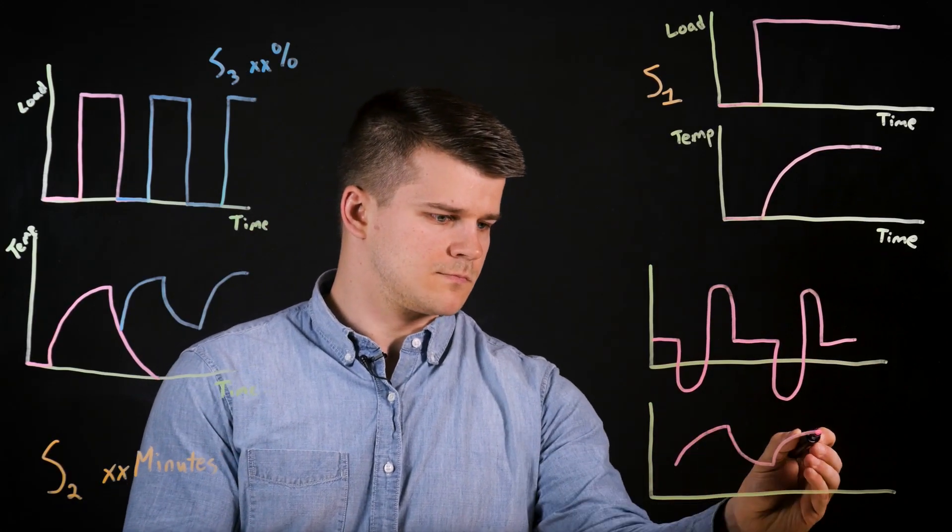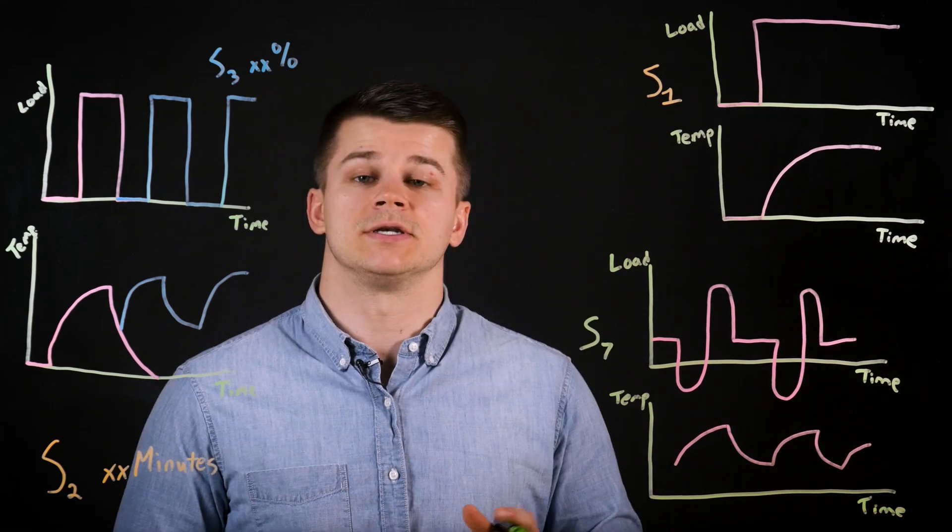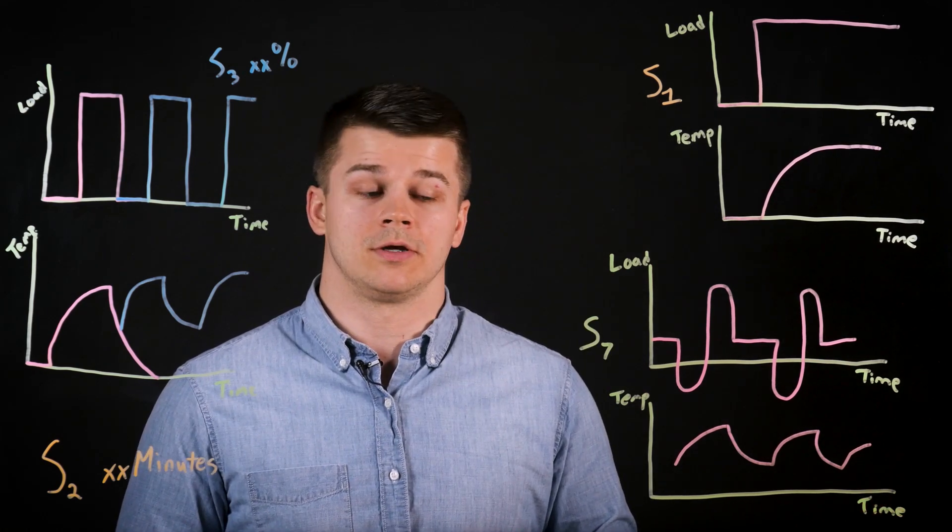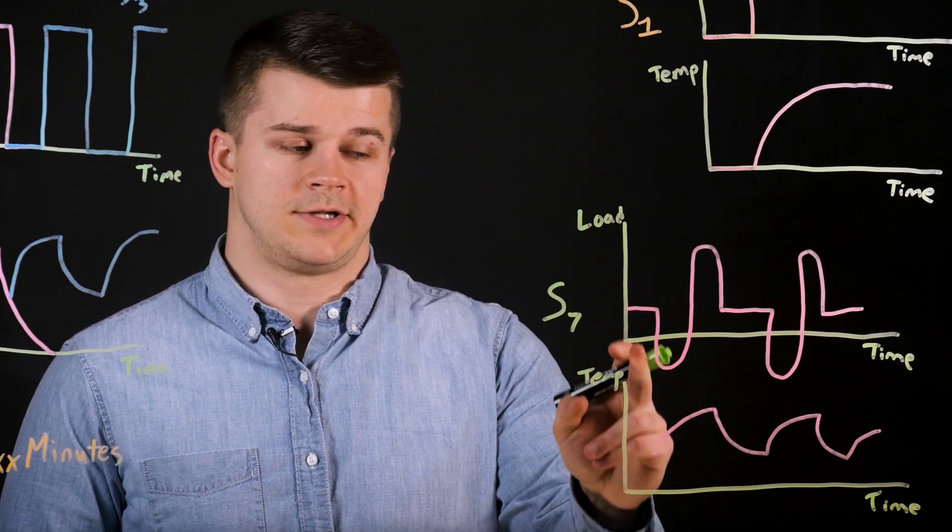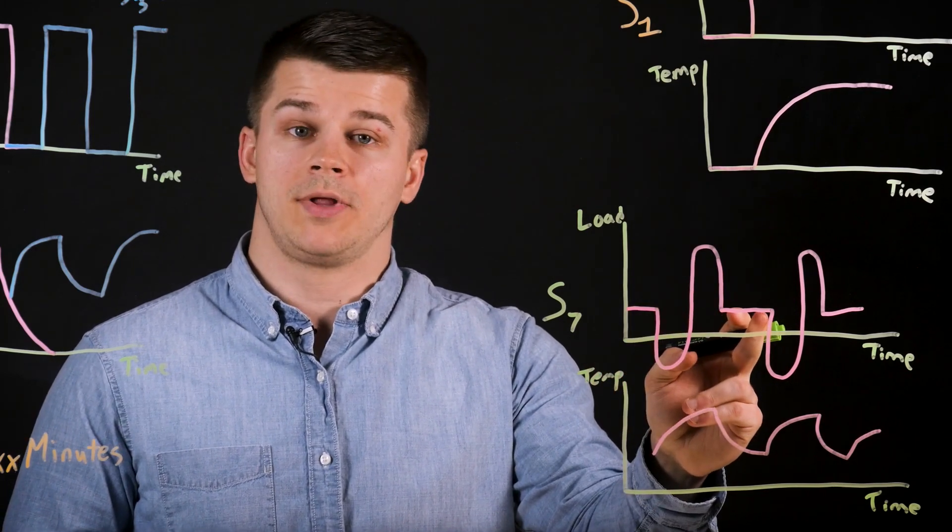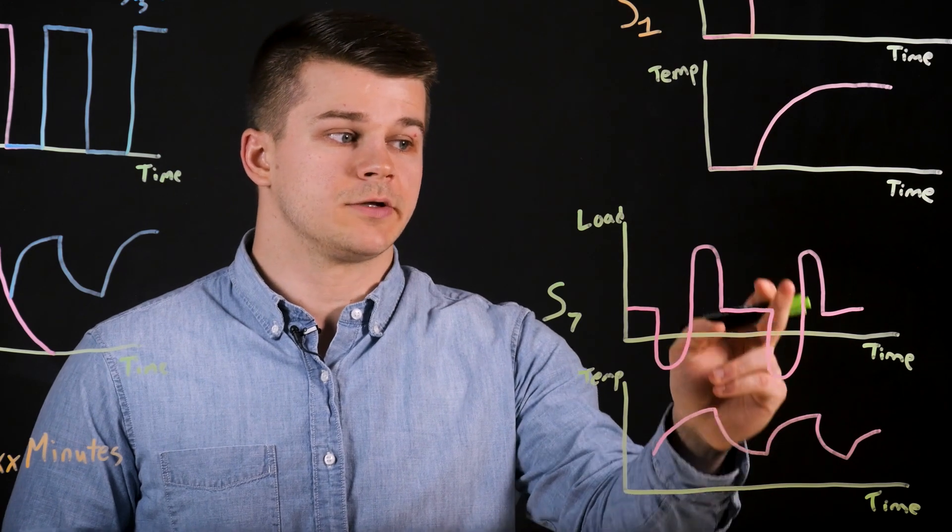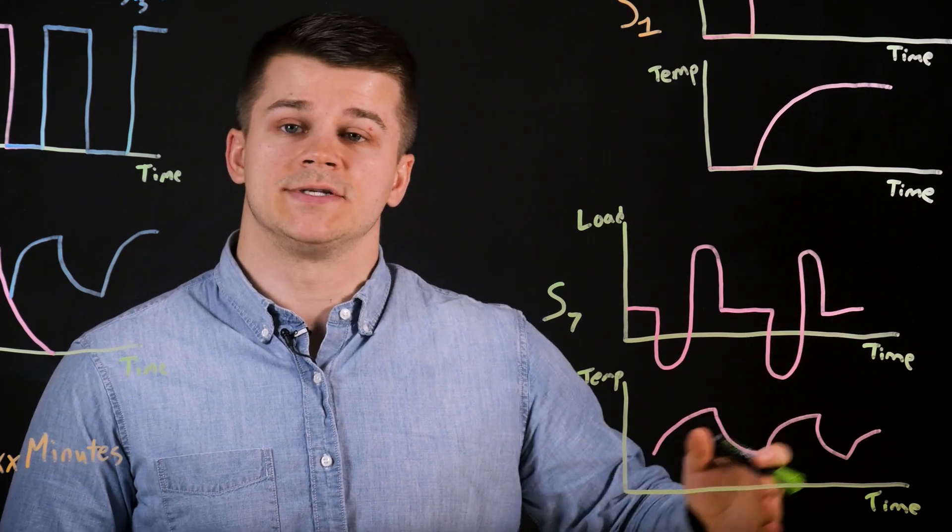The next more complex type of motor duty cycle we'll talk about is continuous operation with electric braking, or S7 duty. In this type of operation, there's electric braking, starting, constant load applied to the motor, and then electric braking, starting, constant load, and it repeats on and on.